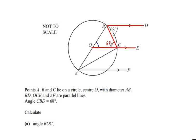By using the alternating angles of the parallel lines. Now let us consider triangle OBC. Triangle OBC is an isosceles triangle because side OB is equal to side OC, as both are the radius of the same circle. Since the sides are the same, we have angle C is equal to angle B, which is also 68 degrees.